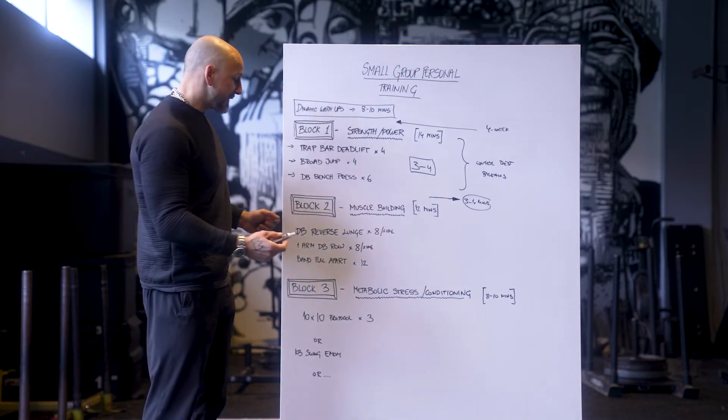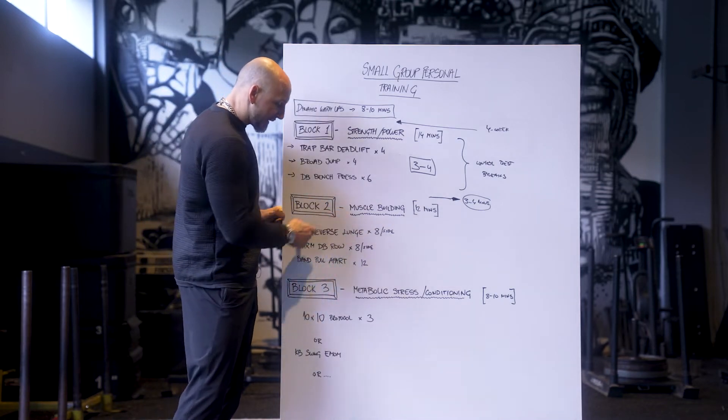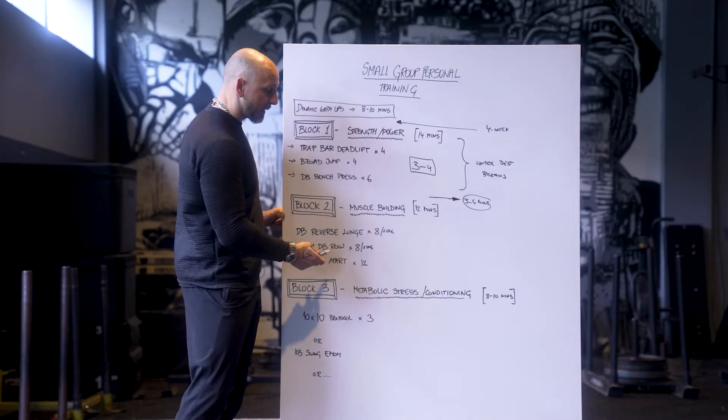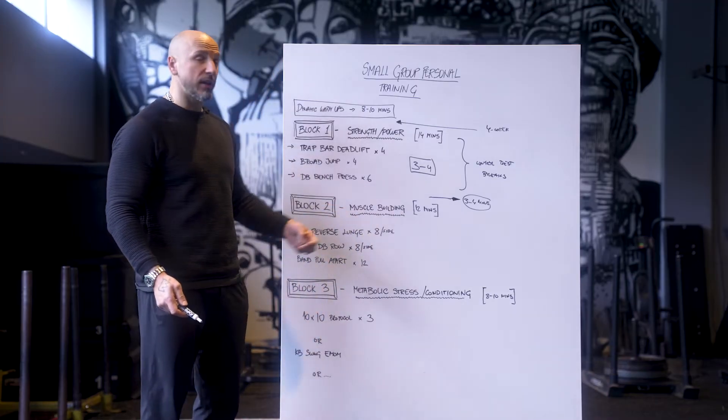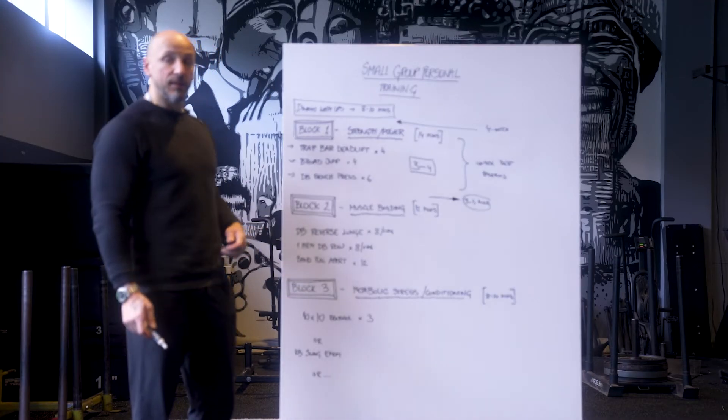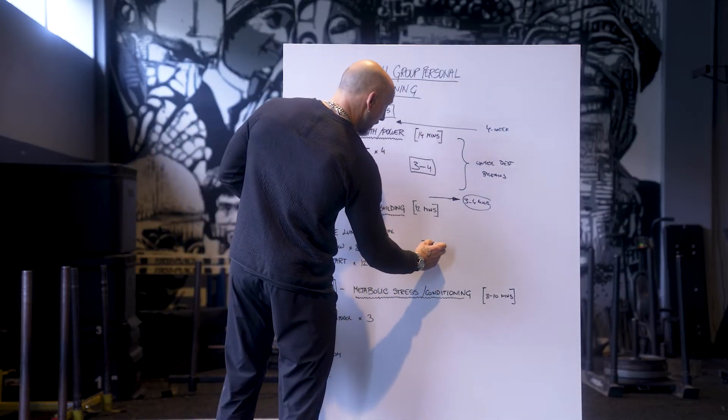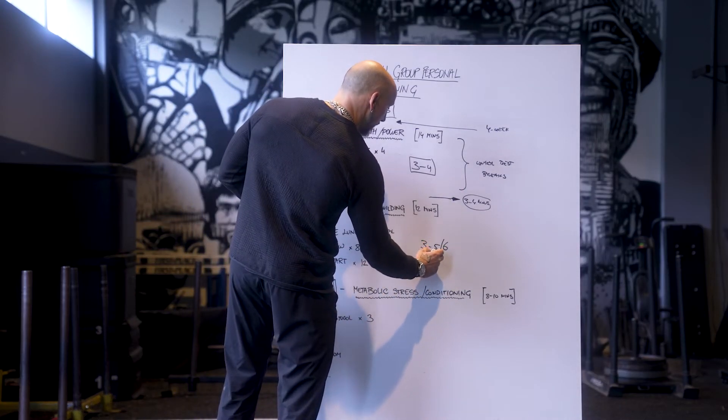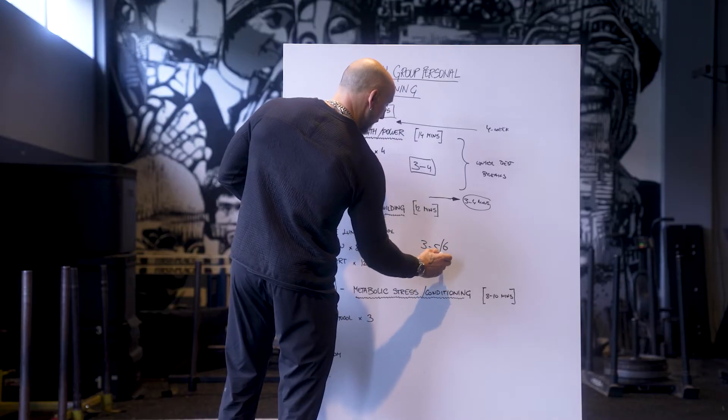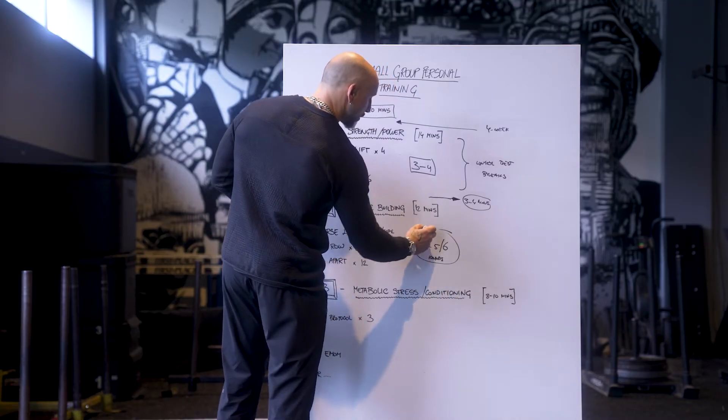In those 12 minutes, let's say it takes them about three minutes to get all three exercises in with decent breaks. That means they should be able to get about four rounds in. Some folks will get more. Anywhere from three to five, some people might get six rounds. They're really pushing it. But it's a good chunk of volume.